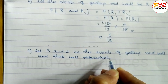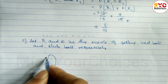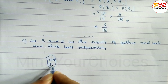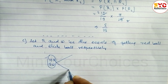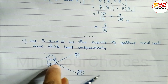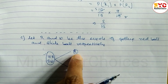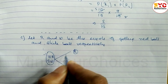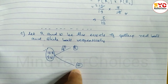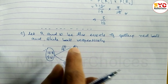We have to show this on a tree diagram. Number of red balls is 10 and number of white balls is 9. When you withdraw one ball, either you will get red or you will get white. Probability of getting red on the first draw is 10/19 and probability of getting white is 9/19.